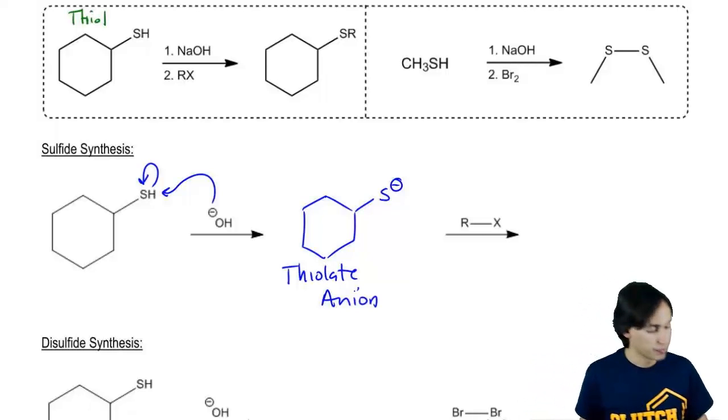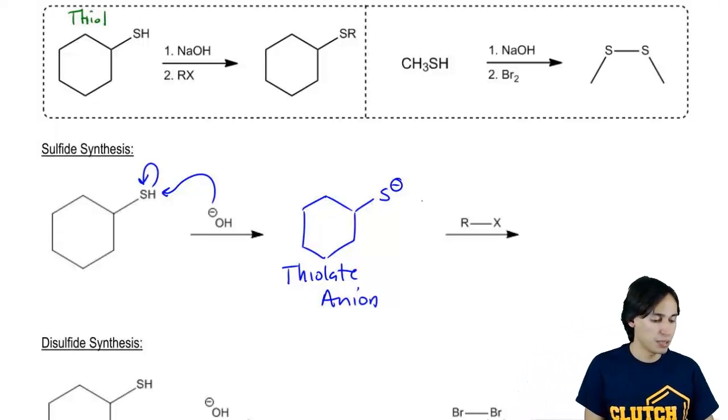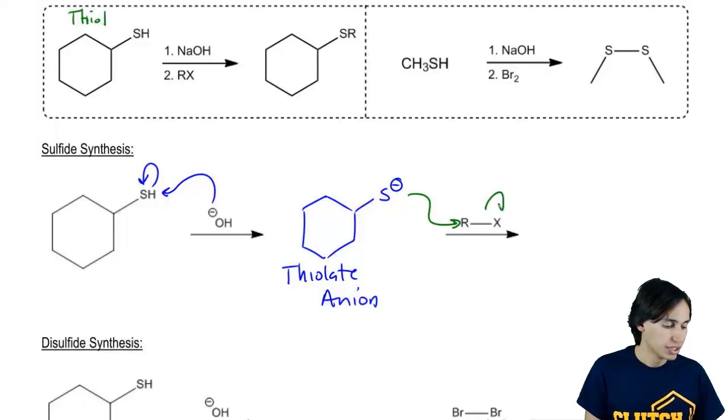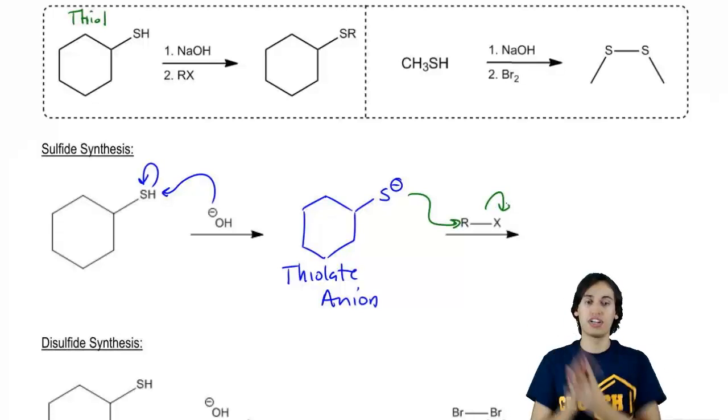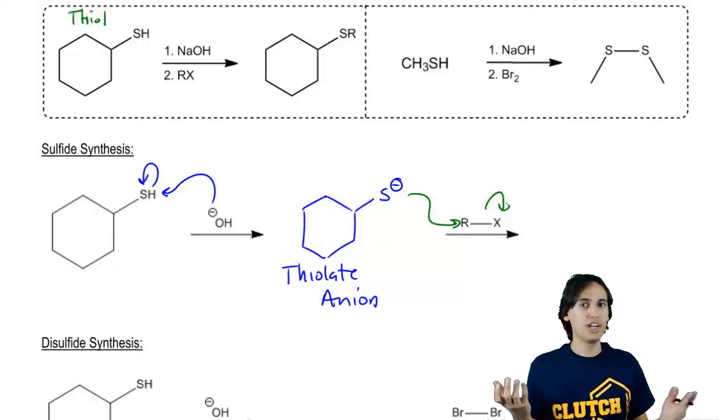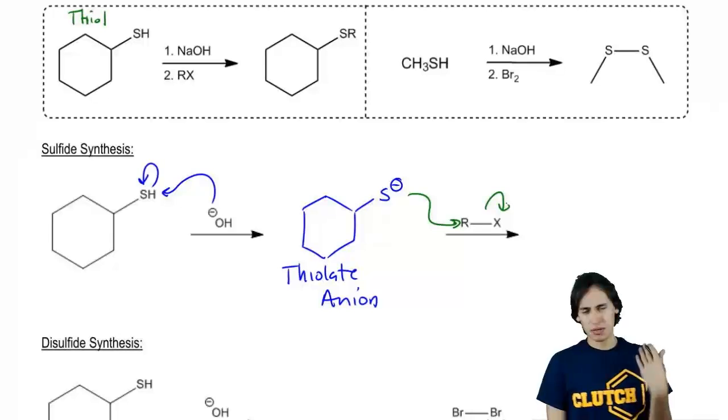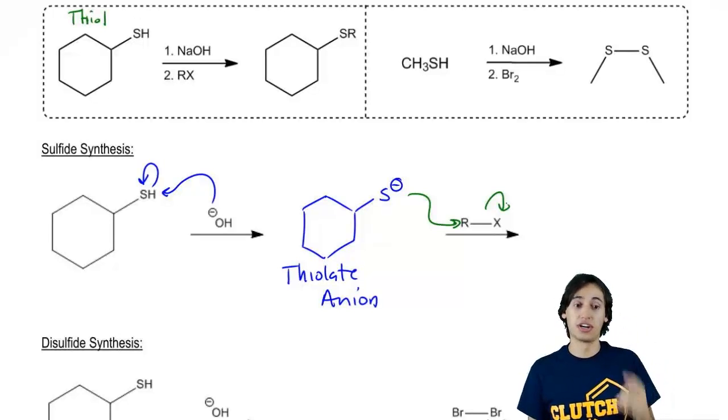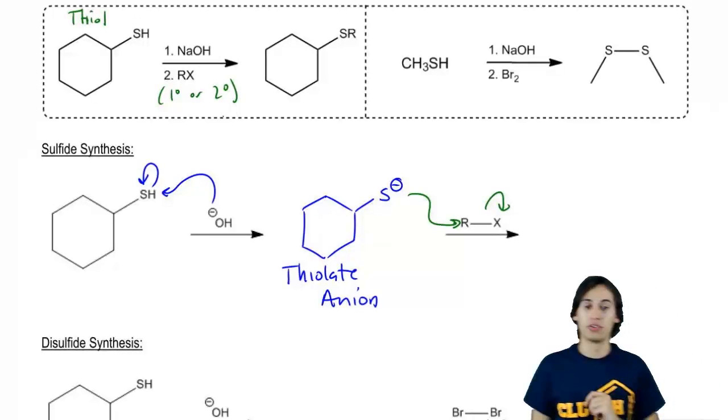So I've got my thiolate anion. Now what can that do when exposed to an alkyl halide? Well, if it's exposed to the right type of alkyl halide, I'm going to be able to do an SN2. Now what do I mean by right type? Well, obviously if this is a tertiary alkyl halide, would that be able to work? No. Because remember that tertiary alkyl halides cannot perform an SN2 reaction. But in most cases, if it's primary or secondary, it's going to work. So I'm just going to add here that this would have to be a primary or secondary alkyl halide.